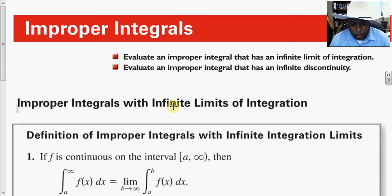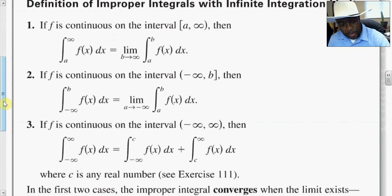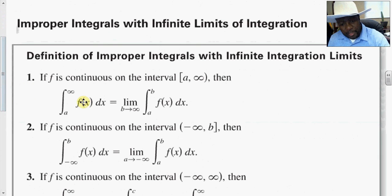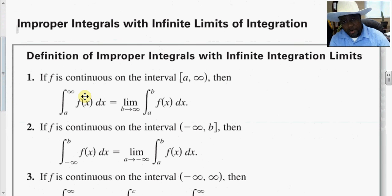With improper integrals, we want to be able to integrate when either one or both of the limits are at infinity, or if you have a discontinuity of the function at a particular value on the interval. For example, if you are integrating 1 over x on the interval from negative 5 to 5, you have a discontinuity of 1 over x at x equals 0, and at x equals 0 you would have a limit at infinity.